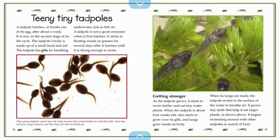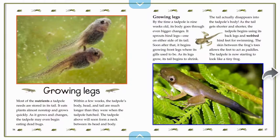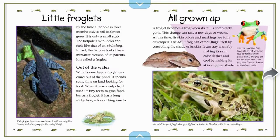Getting stronger. As the tadpole grows, it starts to swim farther and eat tiny water plants. When the tadpole is about four weeks old, skin starts to grow over its gills and lungs grow inside its body. When its lungs are ready, the tadpole swims to the surface to breathe air. It grows tiny teeth that help it eat larger plants. It begins swimming around with other tadpoles in search of food. Then tadpoles start to grow legs, turn into little froglets, and eventually are all grown up.